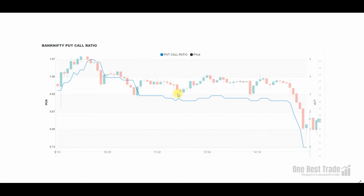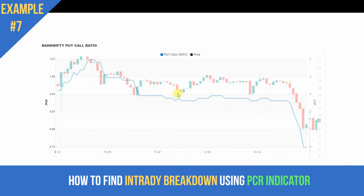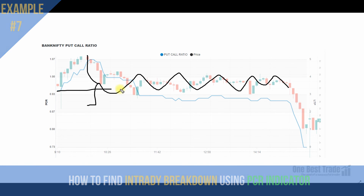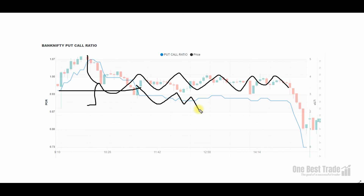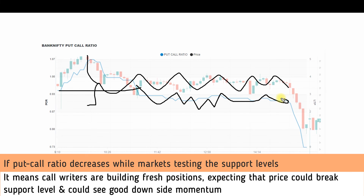In the last breakdown example, the price is trading within the morning range the whole day. But the PCR indicator breaks the day low and keeps trending lower, making lower high and lower low. This indicates extreme weakness — the moment the price breaks the day low, we could see a very big fall. This is how you can spot or identify breakdowns using the PCR indicator.